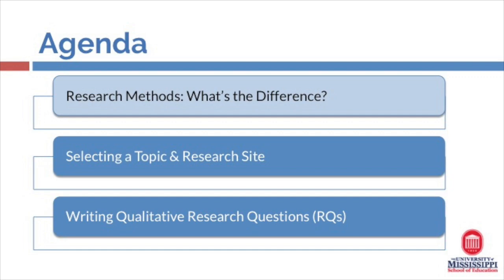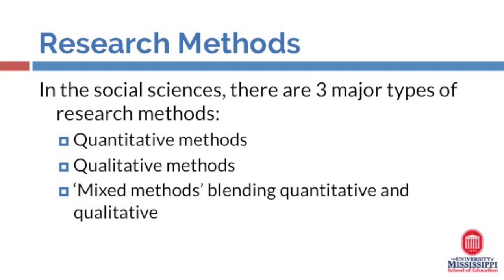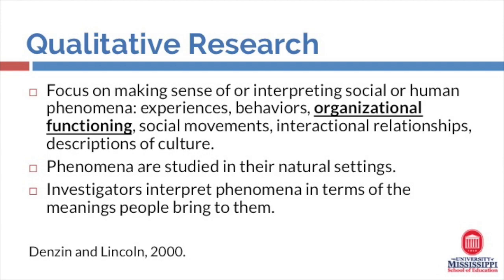First, we begin by exploring the important differences between qualitative and quantitative research methods. In the social sciences, there are three major types of research: quantitative methods, qualitative methods, and mixed methods research that blends both quantitative and qualitative approaches. Qualitative research focuses on making sense or interpreting social and human phenomena — things like experiences, behaviors, organizational functioning, social movements, interactional relationships, and descriptions of culture.